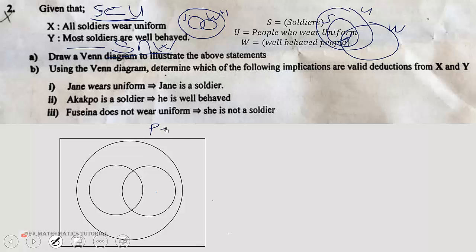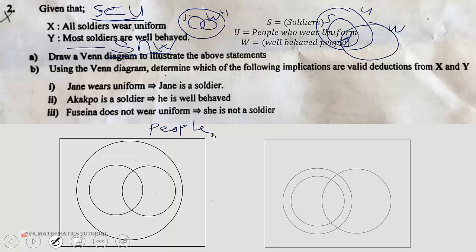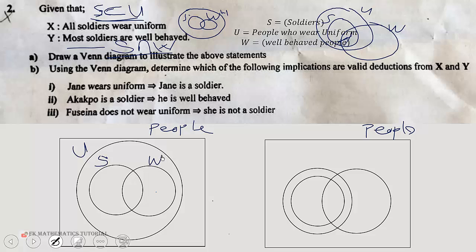The universal set represents people. We have people who wear uniform (U), people who are soldiers (S) — with S inside U — and people who are well behaved (W), which intersects S.